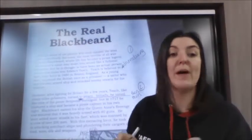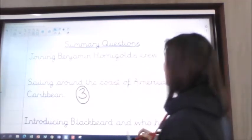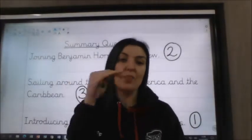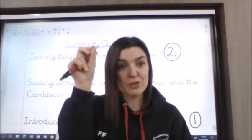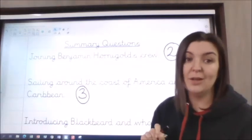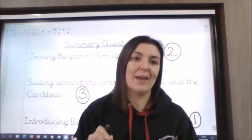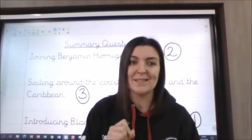Only then do I go back to the question. The introducing one was number one, Benjamin Hornigold was number two, and sailing around the Caribbean was number three. So please, please on that ordering question, use this strategy: find all the events first, put some notes to remind yourself, then number them, then go back to the question to number it. Because it's too easy to get confused on those — you can't guess.